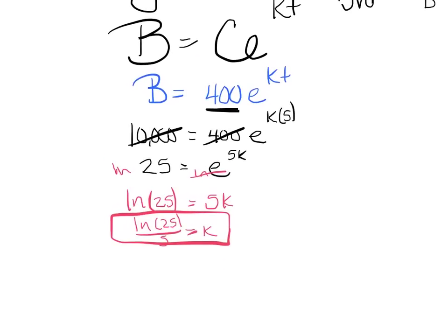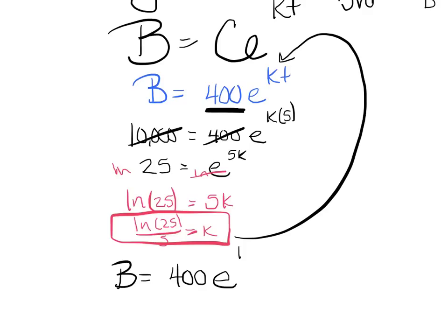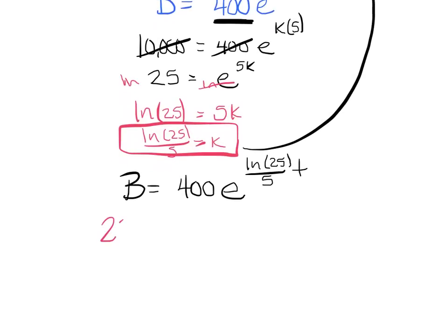So I'm just going to go back to my formula and substitute in the k. I'm not changing my initial 400. B equals 400e^(ln(25)/5 times t). And the question said at what time, so I'm finding t, will I have 20,000 bacteria?